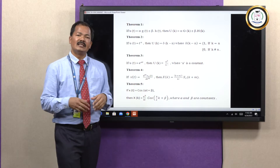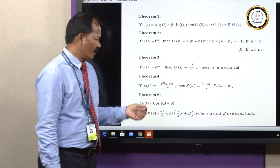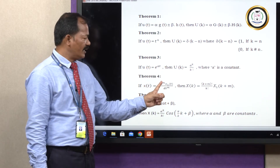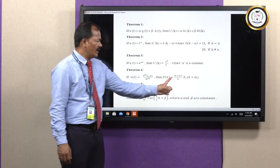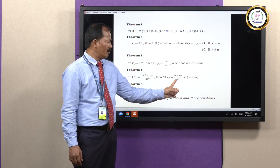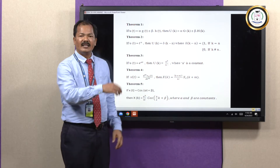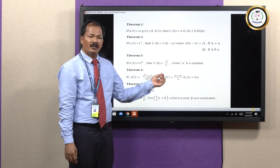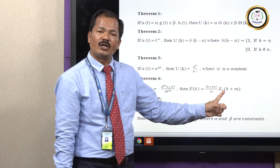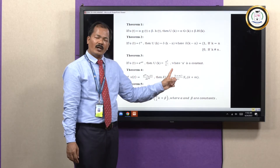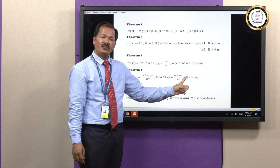Since we are discussing the second order linear differential equation, let us take m equals 2. Then x of t equals d-squared x1 of t upon dt squared, and the transform is X of k equals k plus 2 factorial upon k factorial times x1 of k plus 2, which simplifies to 1 upon (k plus 1)(k plus 2) times x1 of k plus 2.